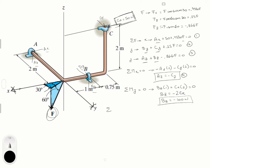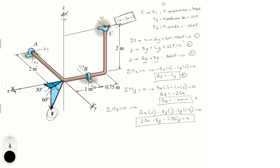Sum of moments about the z-axis equals zero — looking from the positive z-axis, counterclockwise positive: Ax × 2 − By × 1 − Cy × 1.75 = 0. Rewriting: 2Ax − By − 1.75 Cy = 0. This is Equation 5 (Bz = −100) and Equation 6 (the moment about z).